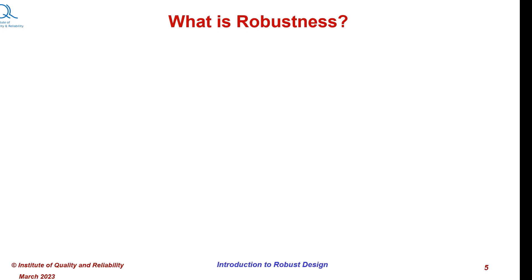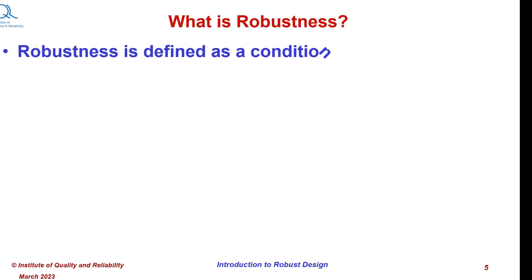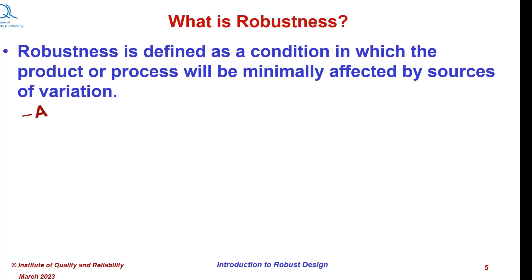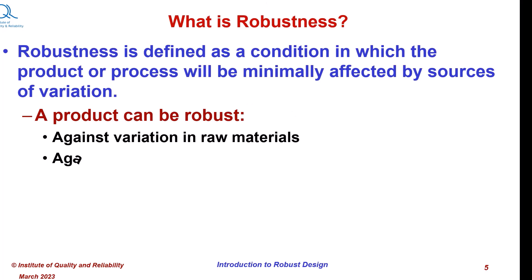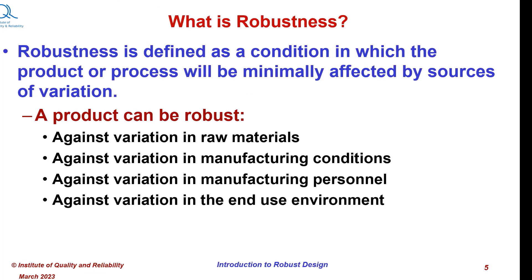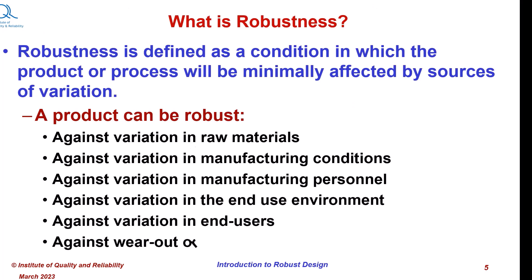So what is robustness? Robustness is defined as a condition in which the product or process will be minimally affected by sources of variation. A product can be robust against variation in raw materials, against variation in manufacturing conditions, against variation in manufacturing personnel, against variation in end-use environment, against variation in end-users, and against wear-out or deterioration or degradation of materials.